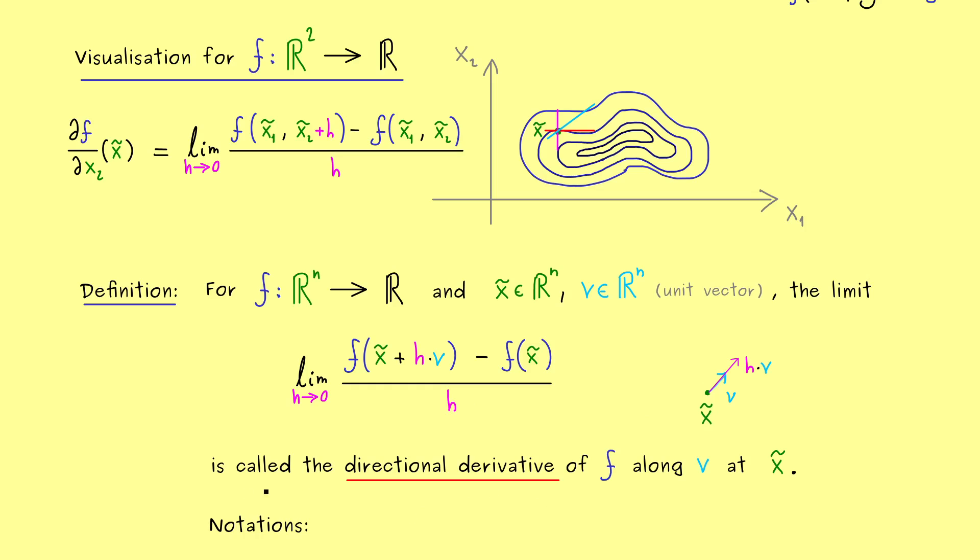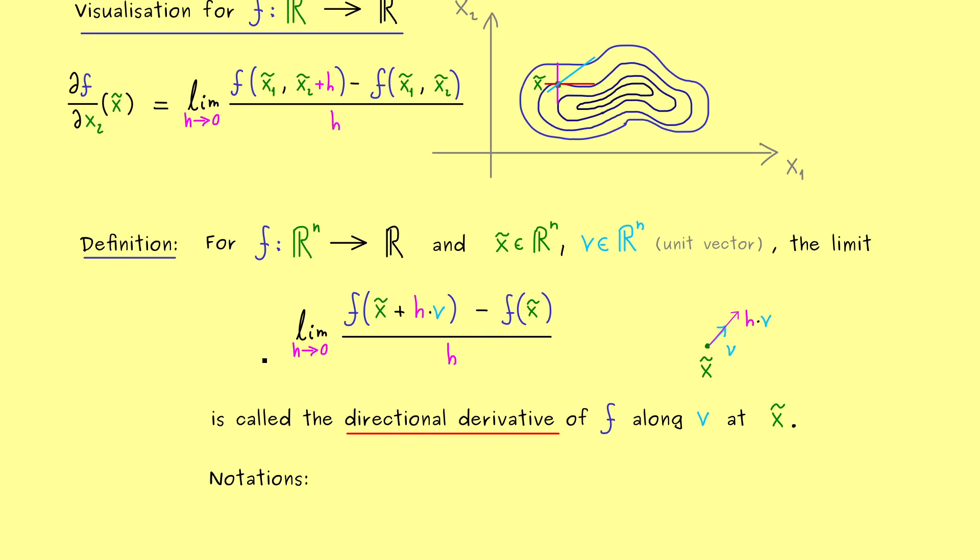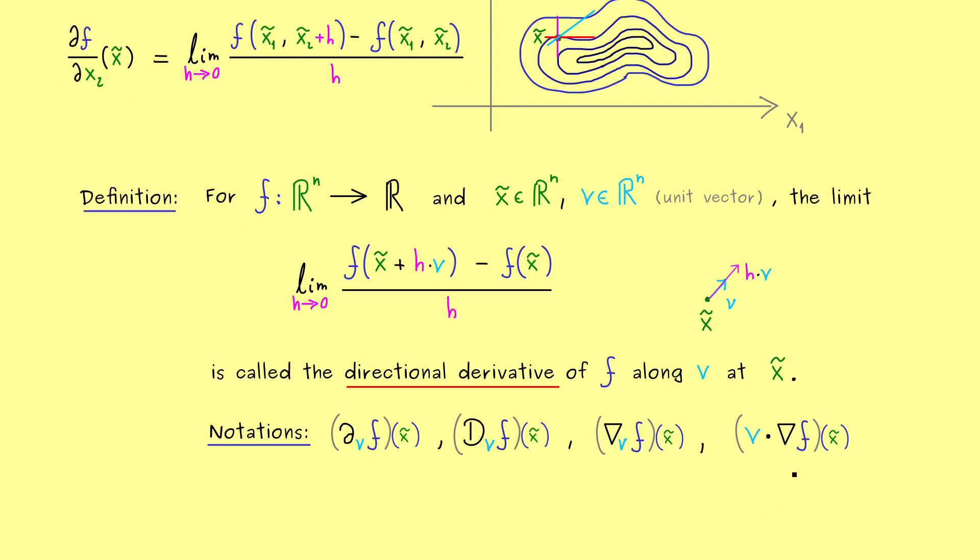At this point you might already guess that there are a lot of different notations different people use to denote this limit here. It's the same problem we have already discussed with the partial derivatives. For example, some people use this curved d with index v. On the other hand, also a capital D is used in the same sense. Moreover, you also see the nabla symbol with index v to denote the directional derivative along v. Be careful here, you shouldn't confuse this with the gradient. The gradient would be a vector and denoted like this. However, the notation of the gradient is also used to denote the directional derivative, namely in this sense: you write vector v dot vector gradient. This should be a short notation for an inner product, and why this makes sense we discuss in a minute. The takeaway from this is simply: please be careful when you read different books because the notations could differ.